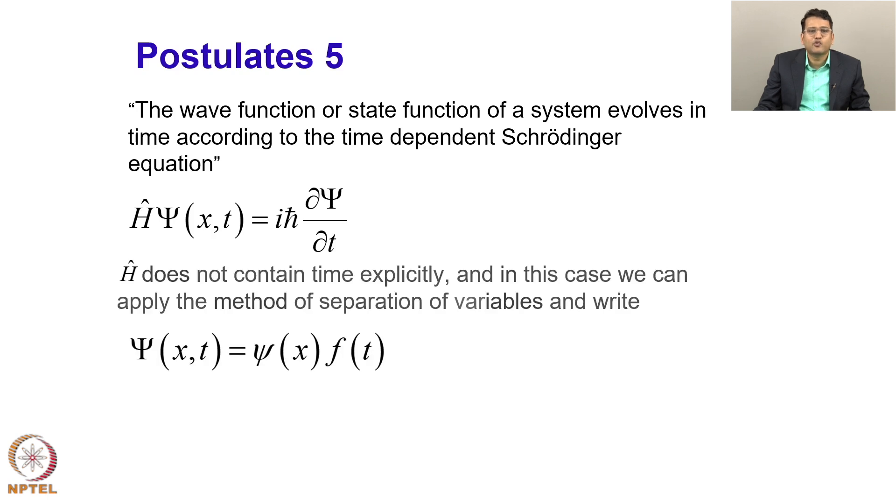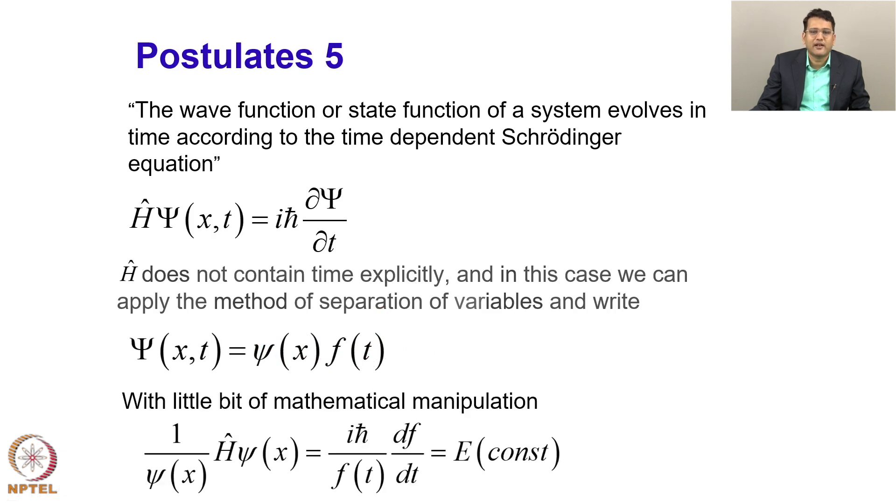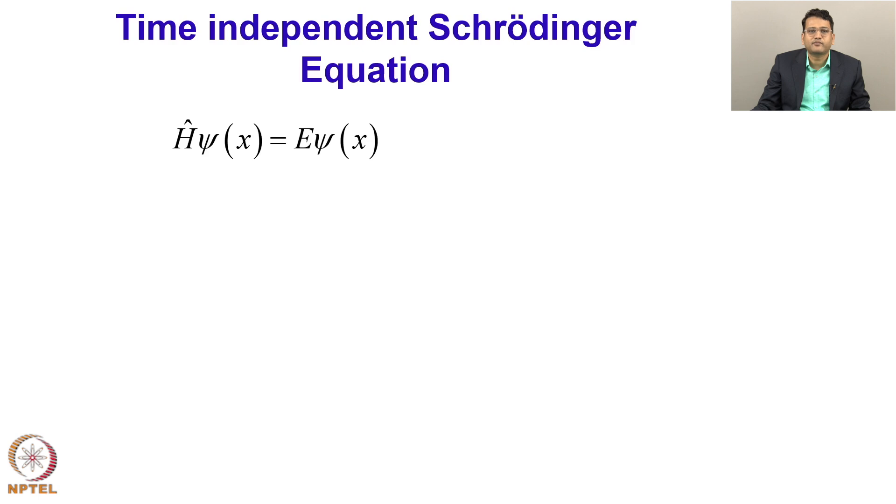Now, in cases where H does not contain time explicitly, so if my Hamiltonian does not have an explicit time dependence, in this case we can apply the method of separation of variables and separate out the total wave function, that is capital psi, into a small psi which only depends upon the position and an f which only depends upon the time. I can rewrite the equation a little bit by doing mathematical manipulation, and that will lead to the famous time independent Schrodinger equation H psi equals E psi, which we are more familiar with.